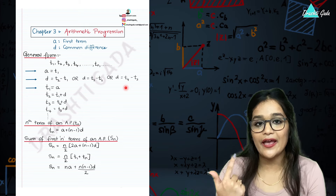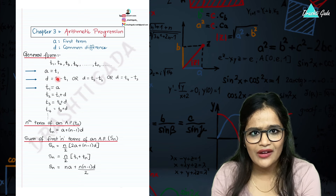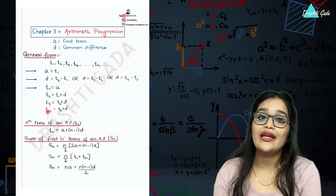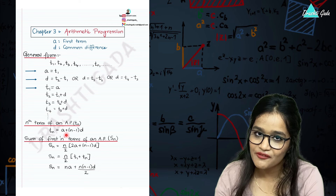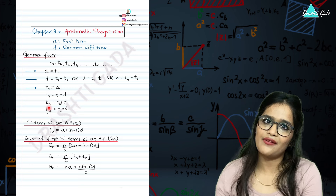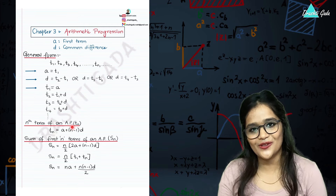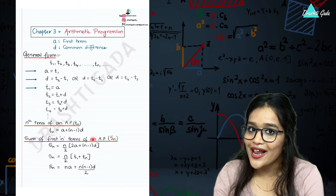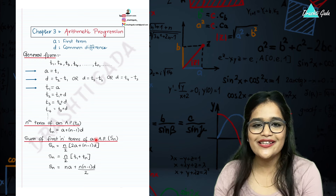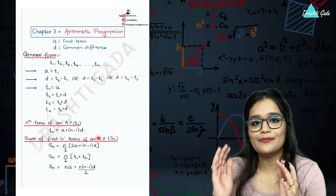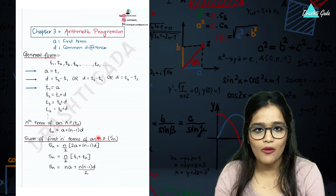If you have the first term and the common difference, you can find the entire arithmetic progression: t1 is just 'a', t2 is t1 plus d, t3 is t2 plus d, t4 is t3 plus d, and so on. To calculate the nth term of an AP, use the formula: tn is equal to a plus (n minus 1) into d. If the question asks for any specific term, use this formula.